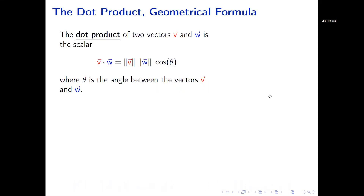Welcome to the video on dot products. Let's discuss the geometric definition of the dot product. The dot product of two vectors v and w is a scalar: v dot w, which is equal to the magnitude of the first vector times the magnitude of the second vector times cosine theta, where theta is the angle between v and w. Remember, cosine is an even function, so theta or negative theta gives you the same value.